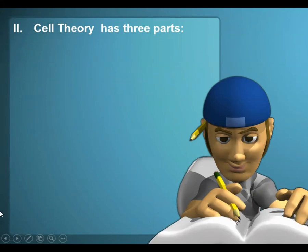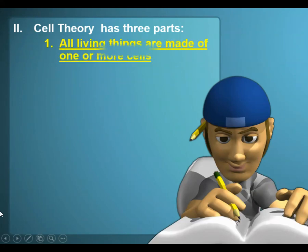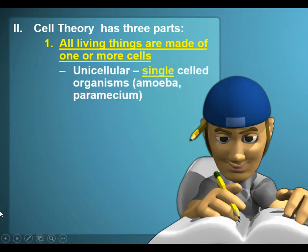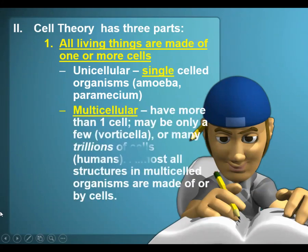Let's start with the cell theory. It has three parts. The first part states that all living things are made of one or more cells. It can be unicellular, which means it's a single-celled organism, like an amoeba or a paramecium.